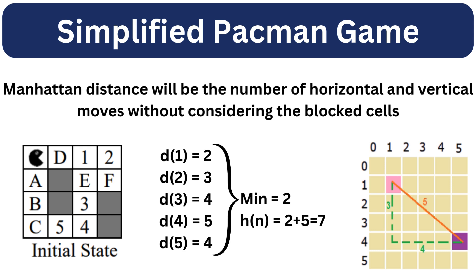For example, in the current state the distance from Pac-Man to the first food cell is 2, to the second is 3, to the third is 4, to the fourth is 5, and to the fifth is 4. The minimum of these distances is 2. Adding the number of remaining dots, which is 5, gives 2 plus 5 equals 7. So the heuristic value of the initial state is 7.